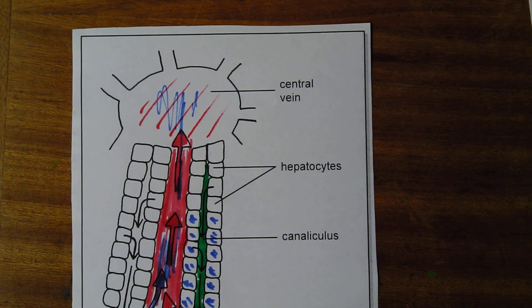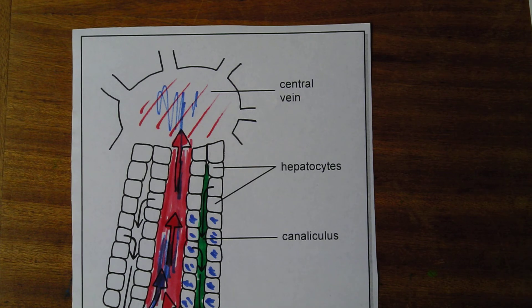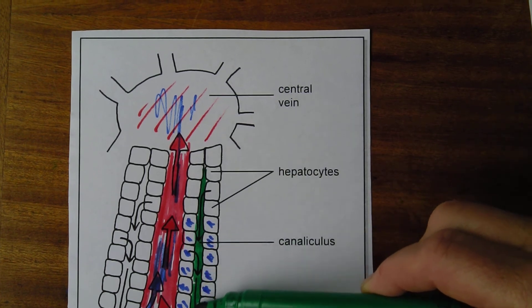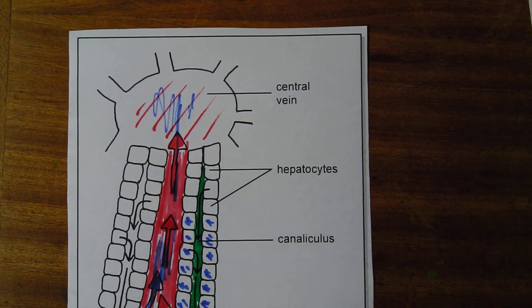Blood is flowing in one direction and bile is flowing in the other direction. The inward flow is called centripetal flow, so the blood flows in the centripetal direction, while bile flows outward in the centrifugal direction — the flow of blood and bile in opposite directions.